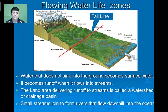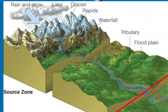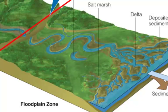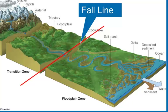The final group of aquatic life zones is the flowing water life zones. Water that doesn't sink into the ground becomes surface water and becomes runoff when it flows into streams. The land area delivering runoff to streams is called a watershed or drainage basin. Small streams join to form rivers that flow into the ocean. In many areas, streams begin in the mountains from rain or melted snow, moving from a source zone into a transition zone and finally into the floodplain zone, which is typically controlled by tides. Where tides are no longer in control is called the fall line, which is also where we find many waterfalls.